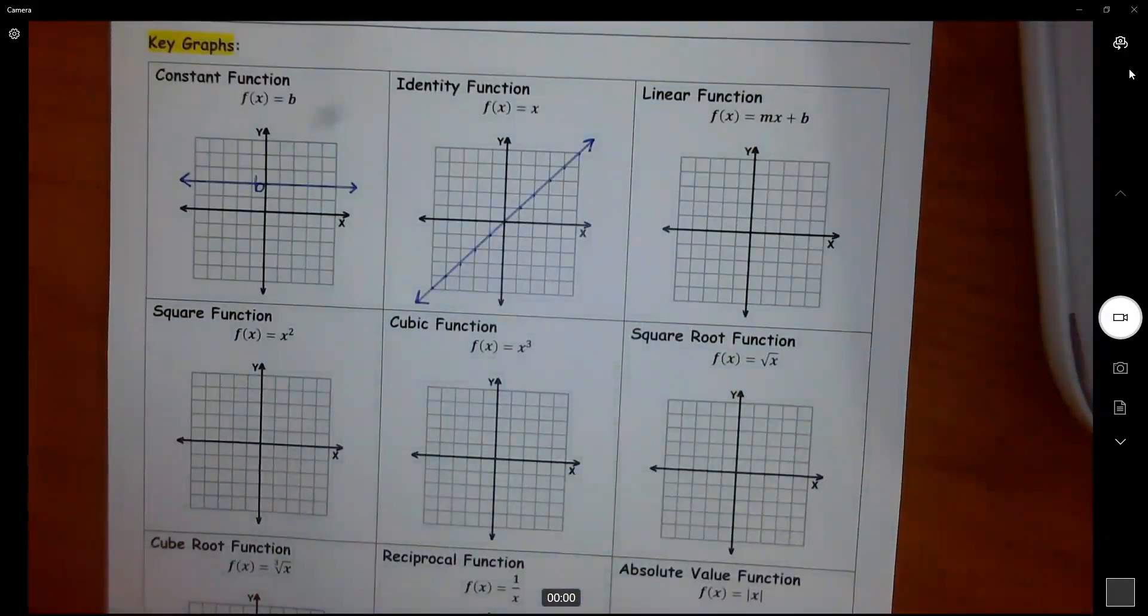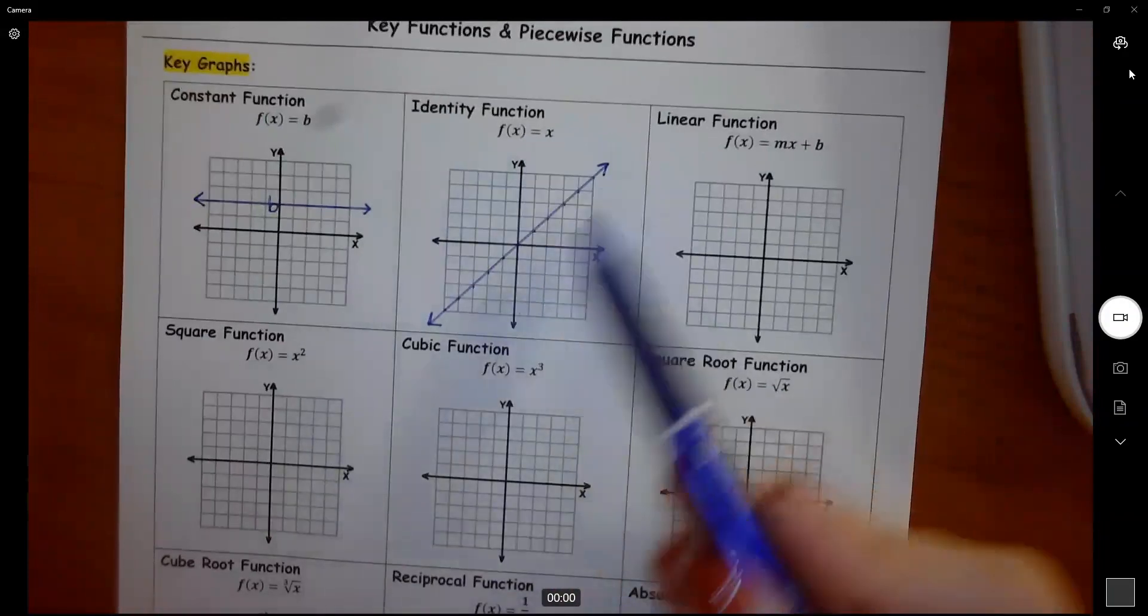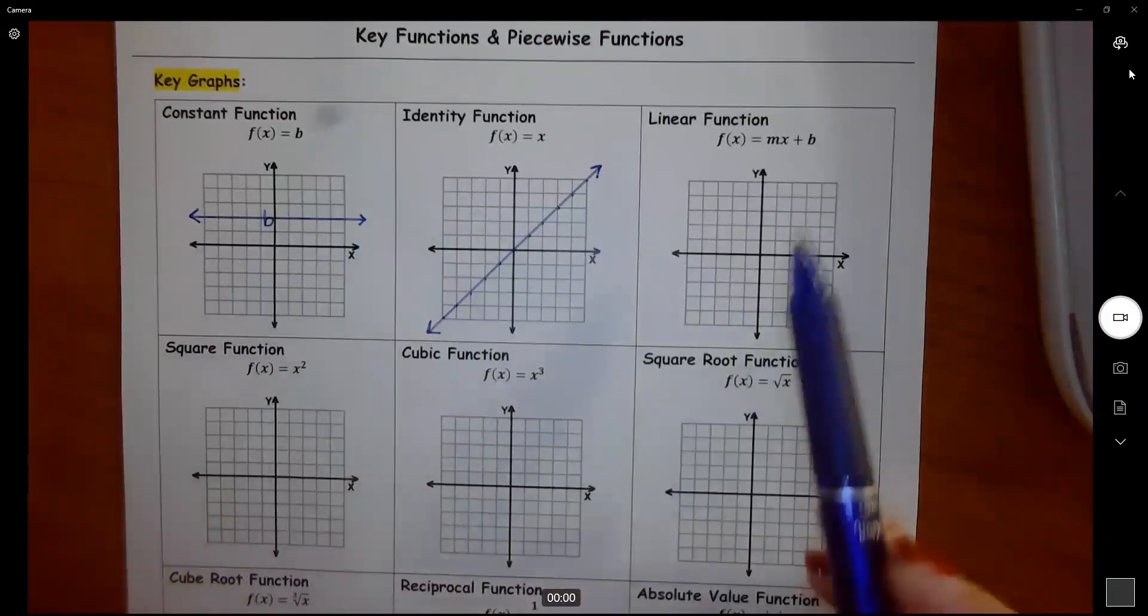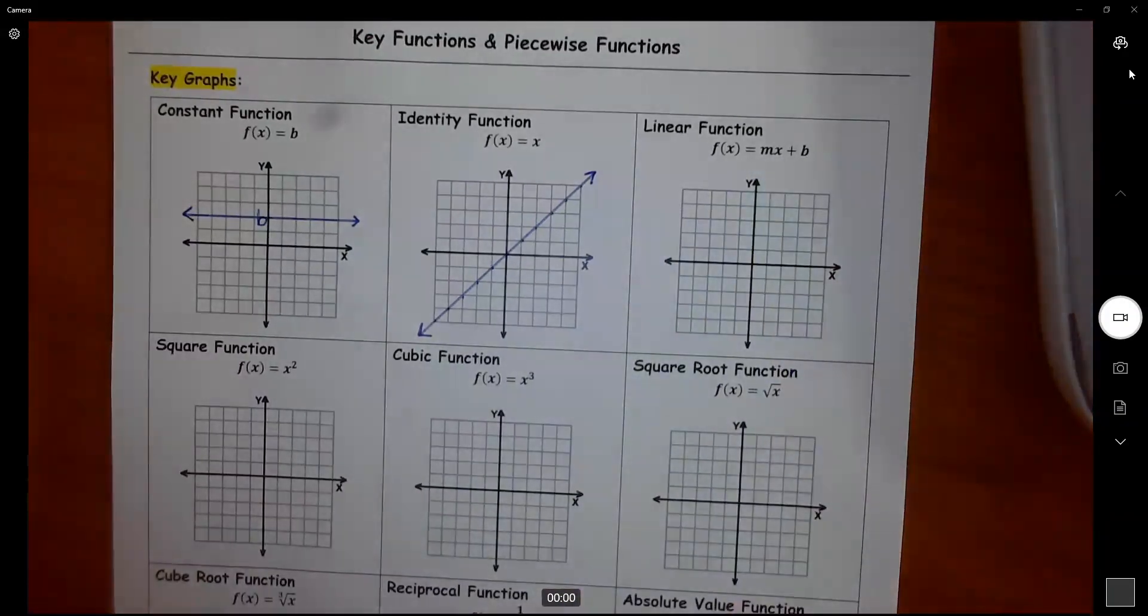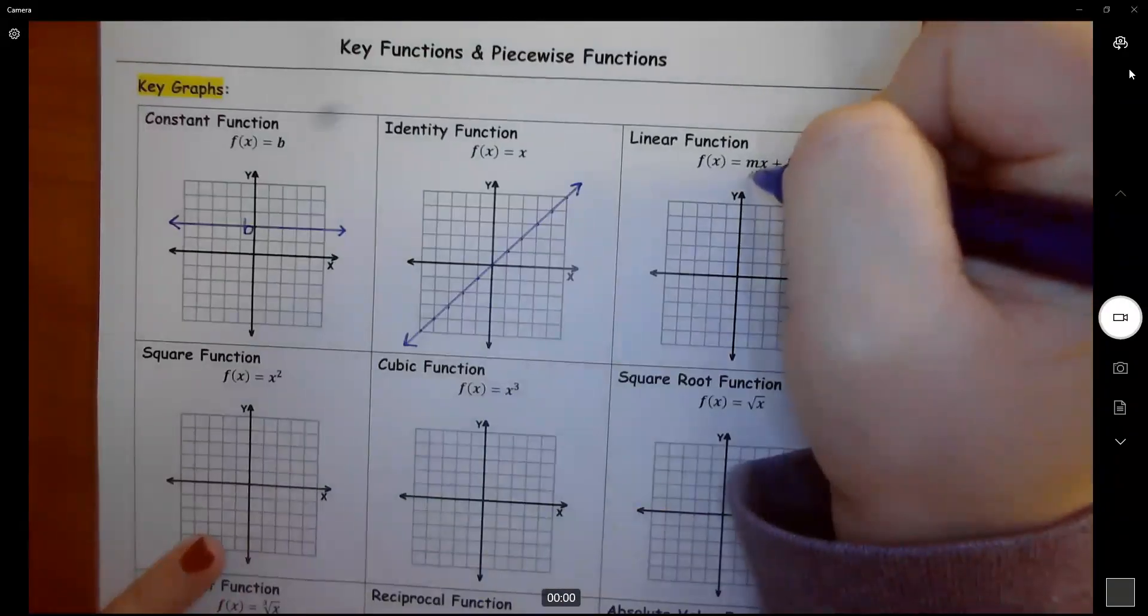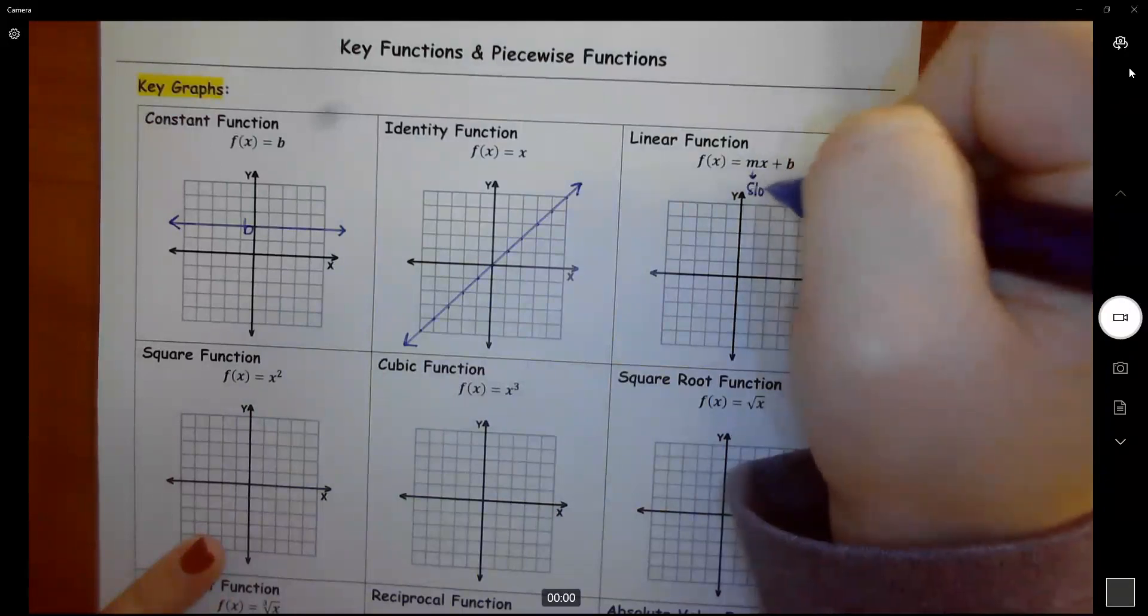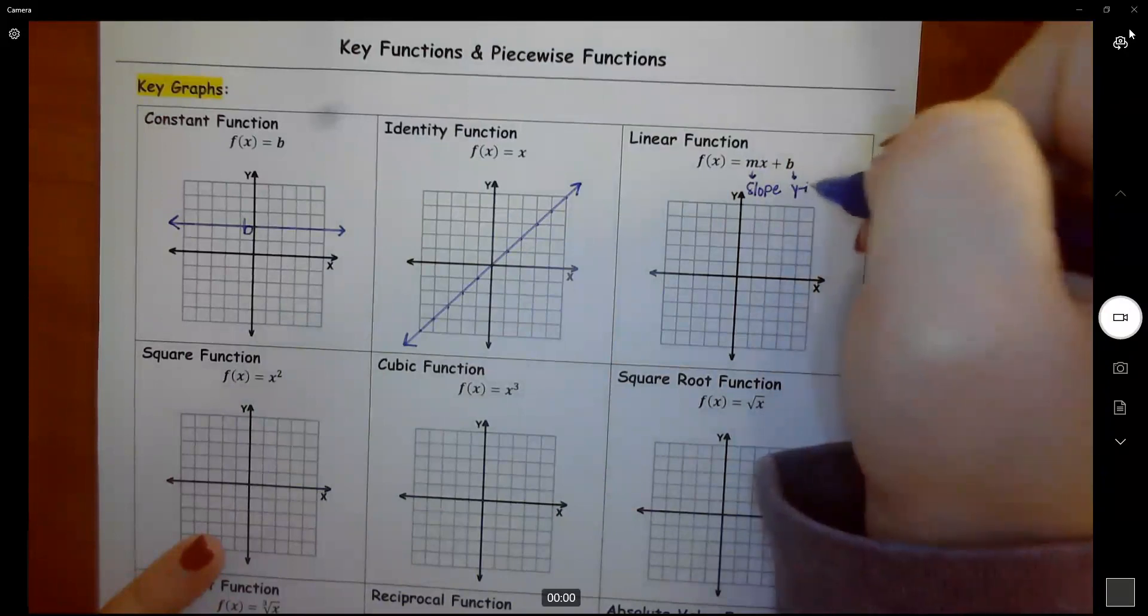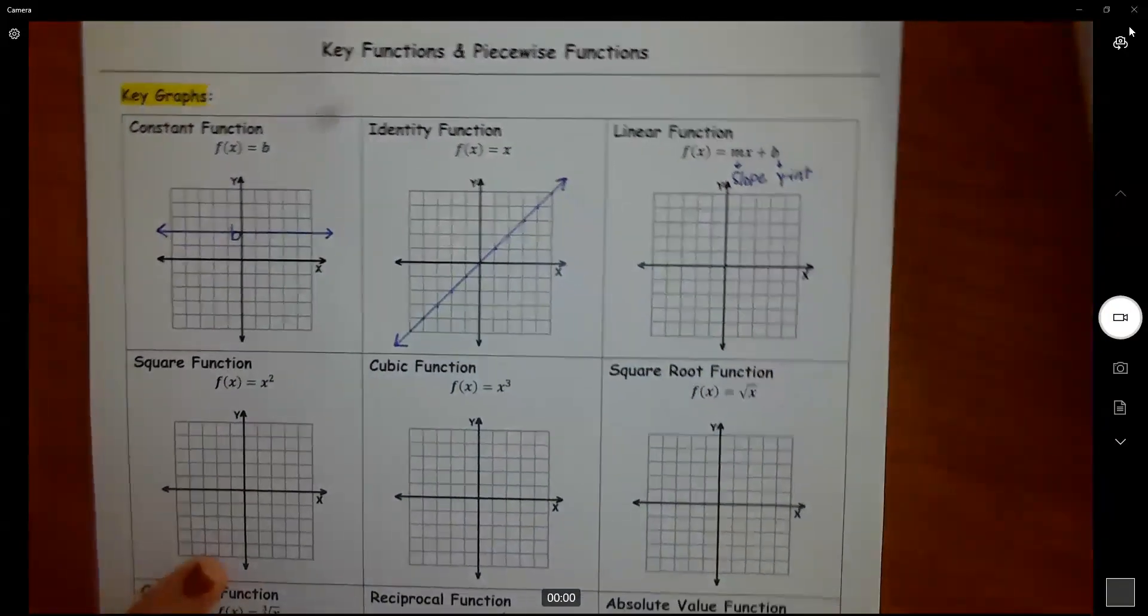Your linear function, this is technically a linear function, right? It's a straight line as well as this one. These are all linear functions. But this one, remember, we've already gone over this. Your m tells you what your slope is, and your b tells you what your y-intercept is.